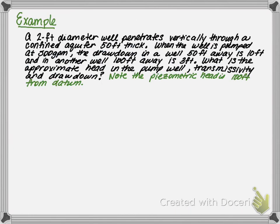An example will help illustrate our point. Consider a 2-foot diameter well penetrating vertically through a confined aquifer 50 feet thick. When the well is pumped at 500 gallons per minute, the drawdown in the well 50 feet away is 10 feet, and in another well 100 feet away is 3 feet.